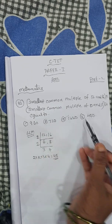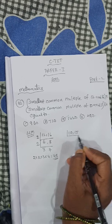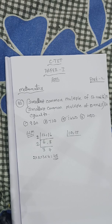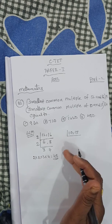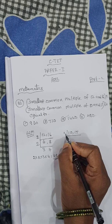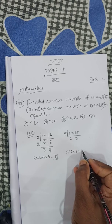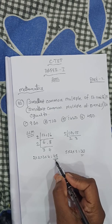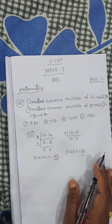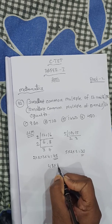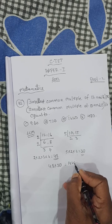Next, smallest common multiple of 10 and 15. We get 5: 5 into 2 gives 10, 5 into 3 gives 15. Multiply: 5 × 2 × 3 = 30. Now both LCMs will be multiplied: 48 × 30 = 1440.